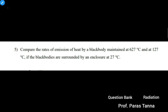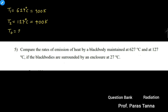As per the data given in this question: the first temperature of the black body, T1, is equal to 627 degrees Celsius, that is 900 Kelvin. The next temperature of the same black body, T2, is equal to 127 degrees Celsius, that is 400 Kelvin. And the temperature of the enclosure, or the surrounding, T0, is equal to 27 degrees Celsius, that is 300 Kelvin.